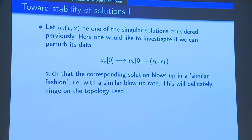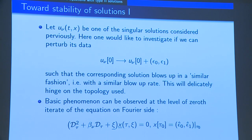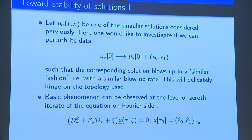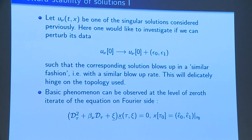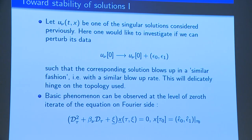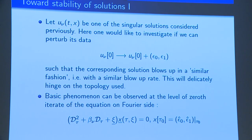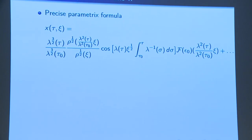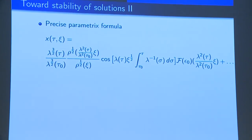Now I said I want to study stability of these solutions. You take such initial data and add a perturbation, and try to understand what the evolution of the corresponding solution looks like. To a zeroth approximation, you look at the linear part of your equation for the perturbation. In terms of the Fourier transform, you get an equation that can be completely explicitly solved — there is a parametrix which we can write down.